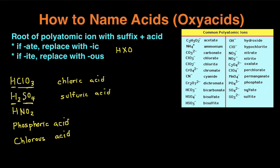So there's two main exceptions. When you're working with sulfate and sulfite, they become sulfuric and sulfurous. And then when you're working with phosphate, it becomes phosphoric. I don't know why, but those are the most common exceptions.